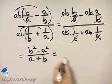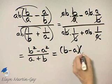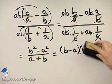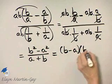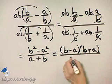This is the difference of two squares. It factors as B minus A times B plus A, and then I'll write down that denominator. The denominator is A plus B, and now study this for a moment. Do I have any factors that are the same?